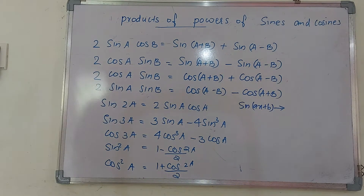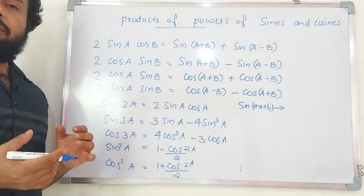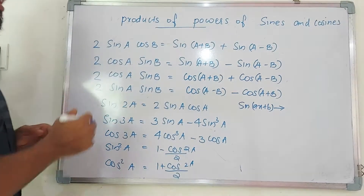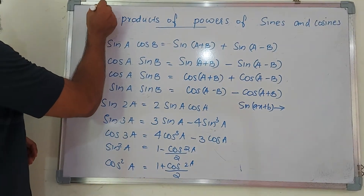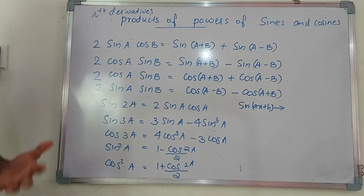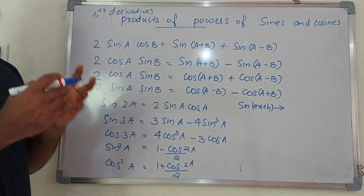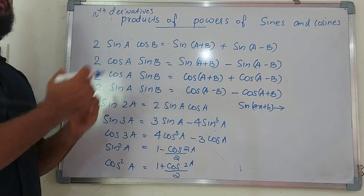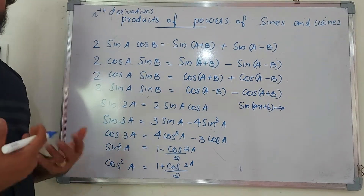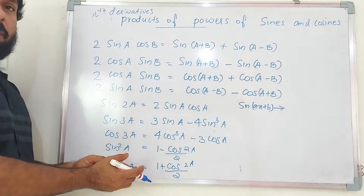In the previous classes we have seen how to find the nth derivatives of some standard functions and also rational functions. Here we discuss how to find nth derivatives of products of functions — functions that involve sines and cosines. If we are given functions with powers of sines and cosines, we generally use certain formulas. There are a number of formulas but here we consider the most common ones.